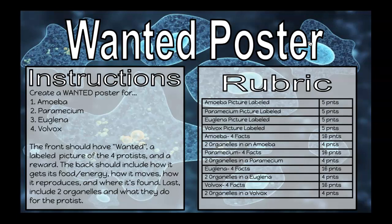On the front of your poster it should have the word 'Wanted,' and then a labeled picture of the four protists. Make sure you find pictures of each protist that have the different parts of their organelles labeled. You'll also put a reward on the front of your poster — your reward can be a piece of gum, your little sister, $10,000, whatever you want, as long as it's appropriate.